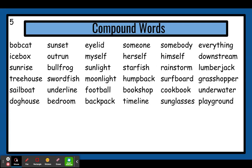Let's read this line of compound words. Try to read it before I do. Treehouse. Swordfish. Moonlight. Humpback. Surfboard. Grasshopper.